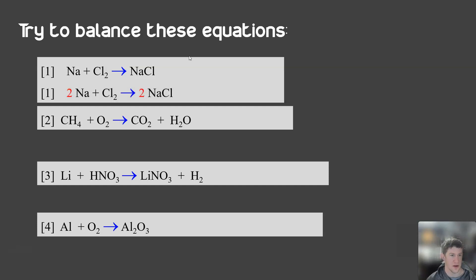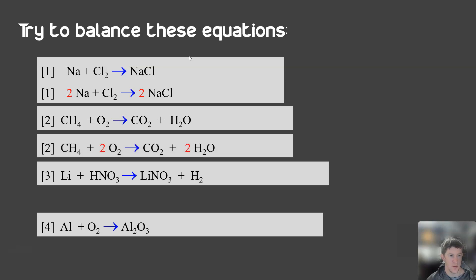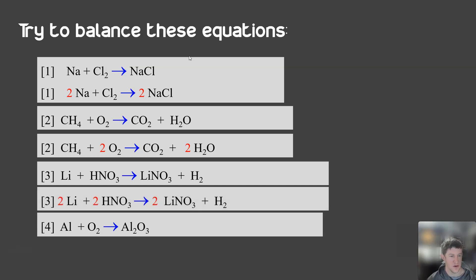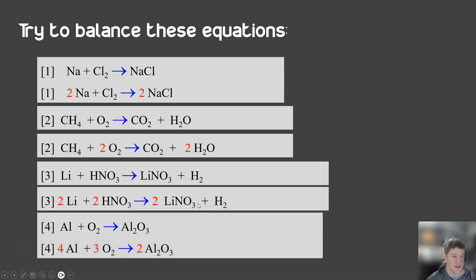Okay, let's take a look. So first one, we simply add twos. The second one, we add a two to the O2, the oxygen, and a two to the H2O, the water. And the third one, we need to add a few. So two on the lithium, two on the, what is it? It starts with an H, so it's an acid. And we've got a nitrogen, so it's nitric acid. And two to the lithium nitrate. And in the last one, I needed some multiples. So I need four aluminium, three oxygen goes to two aluminium oxides.